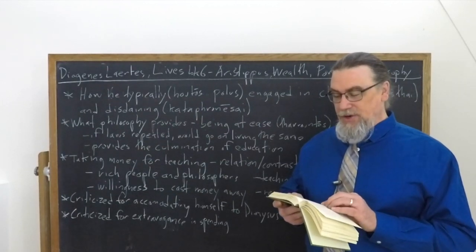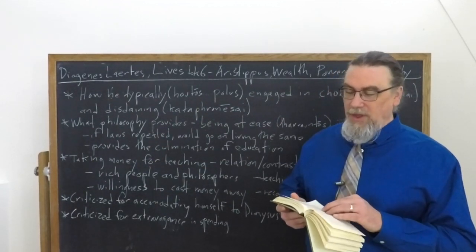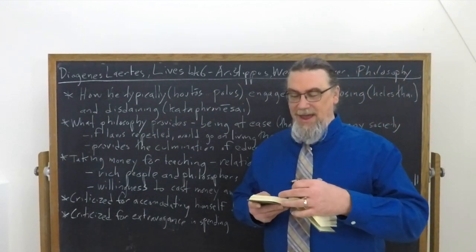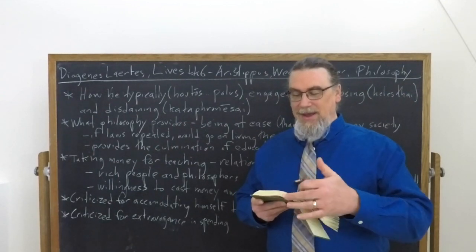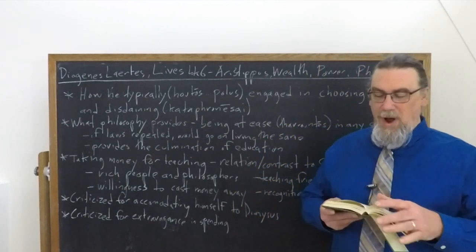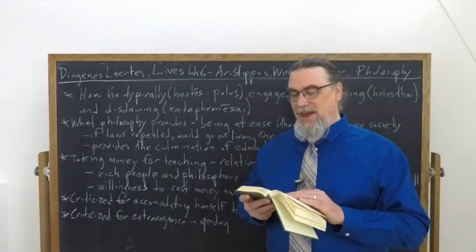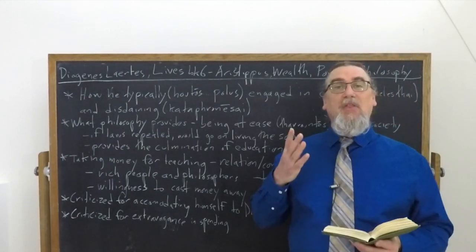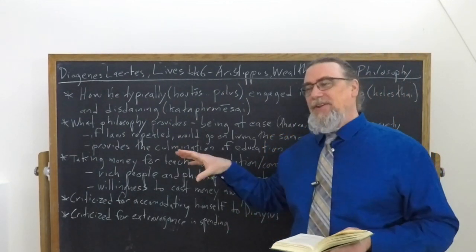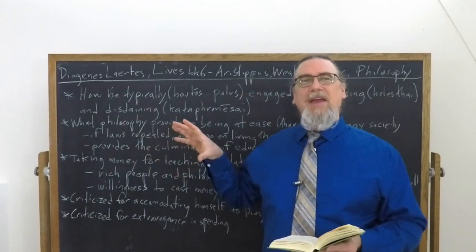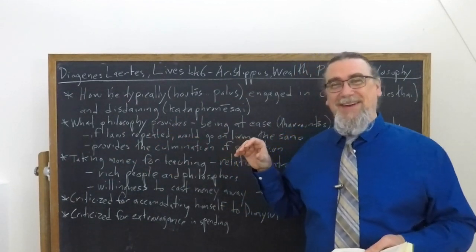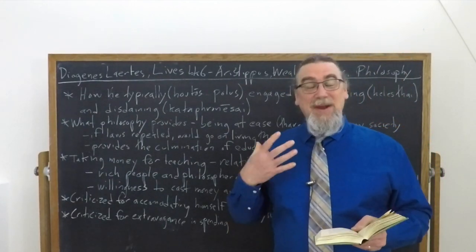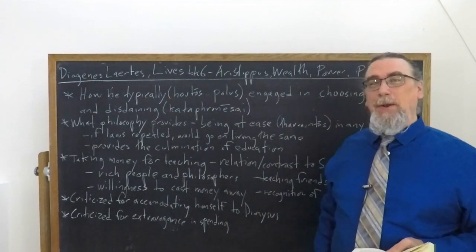So this money making issue and this relationship to Socrates. Now he will say, interestingly, later on, when he's being asked about why he's taking money that, here we go. When I needed wisdom, I went to Socrates. Now that I need money, I come to you. Socrates literally does, he does have a pot to piss in, but not much more than that. And he's dependent on his followers, helping him out. But he has wisdom that Aristippus can glean or gain from him. Everybody else is there as somebody who can contribute the funds.